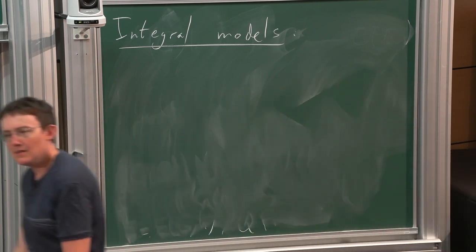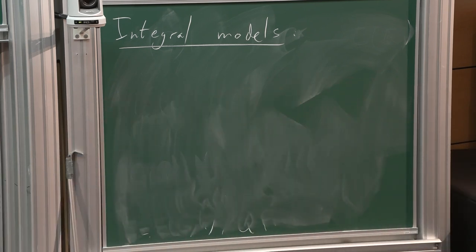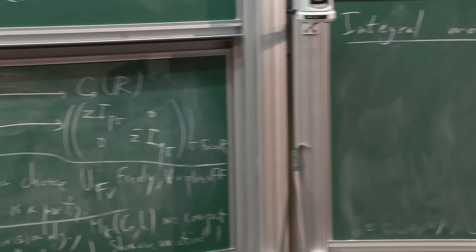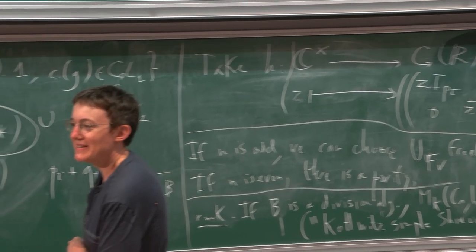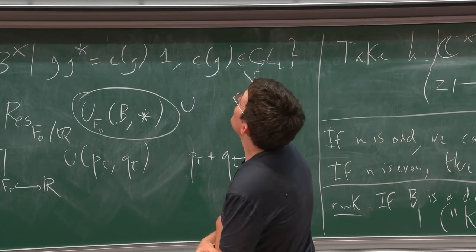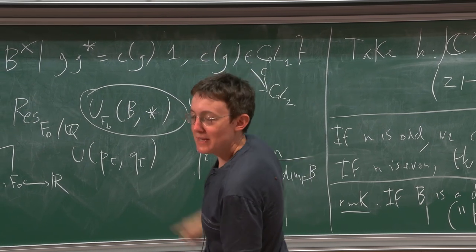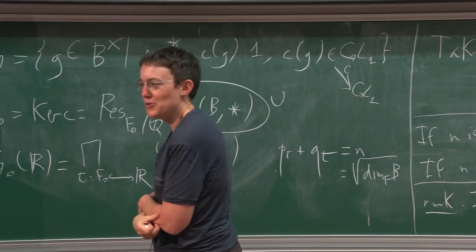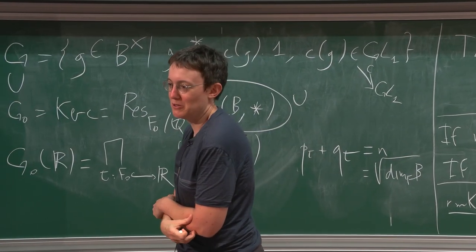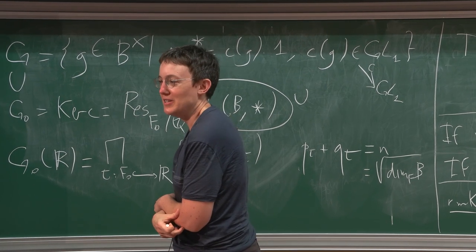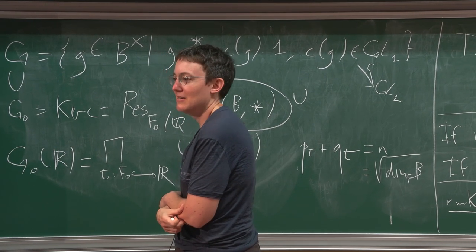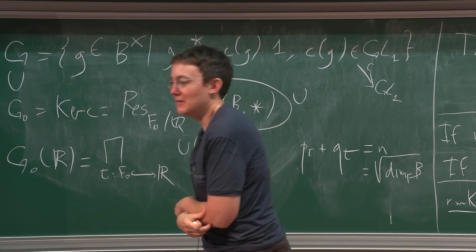Question: not every Shimura datum can be embedded inside the symplectic group? Answer: those are the Hodge type ones, and not all of them can. First, you cannot get all types — E6 and E7 you can't. Also there are problems with the center of G. If you look at Deligne, he lists all the conditions on G so that you can embed G into the symplectic group with this Shimura datum.